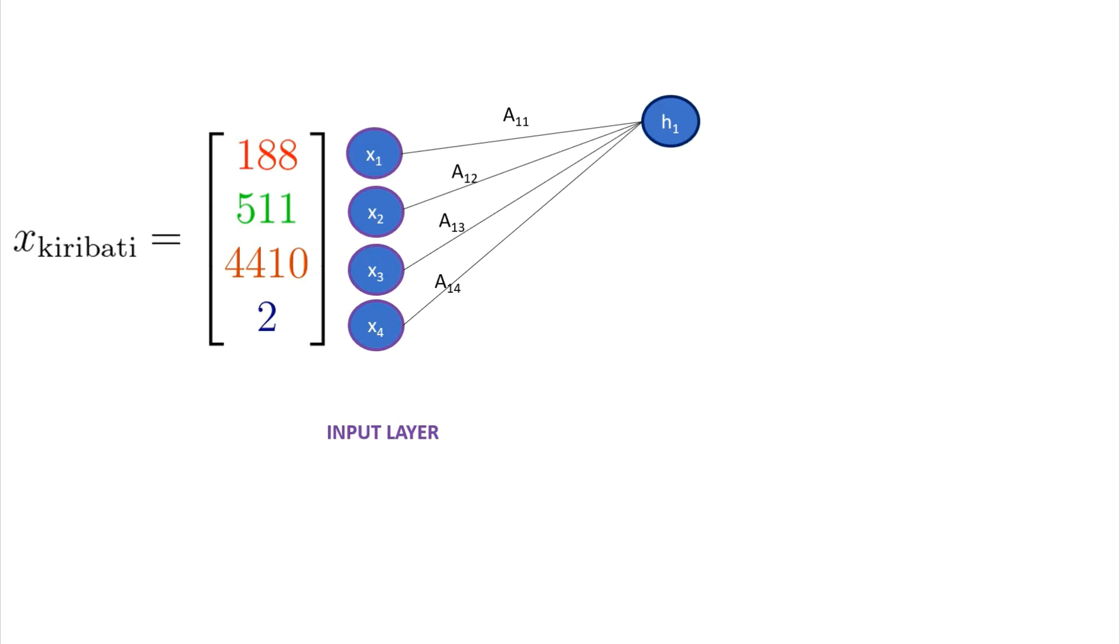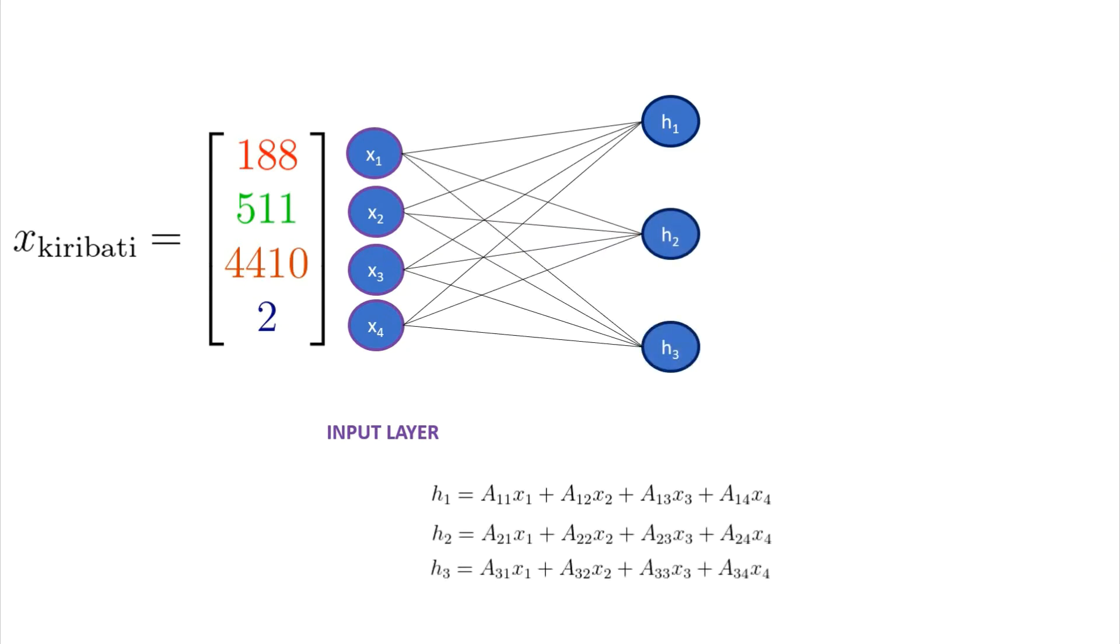We can repeat this for nodes H2 and H3 so that we have a set of three linear equations. We can combine this into a single matrix equation and then simply write it as the vector H is equal to the matrix A times the input vector x.